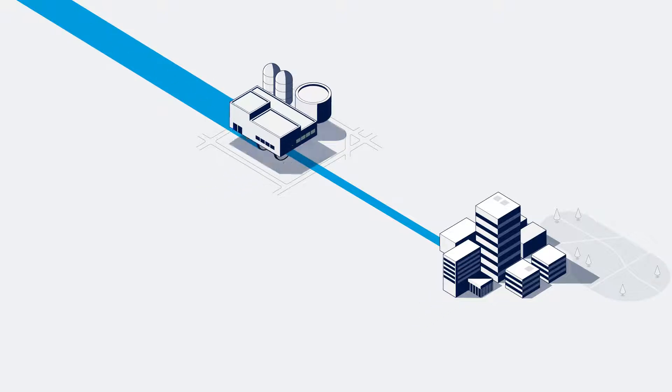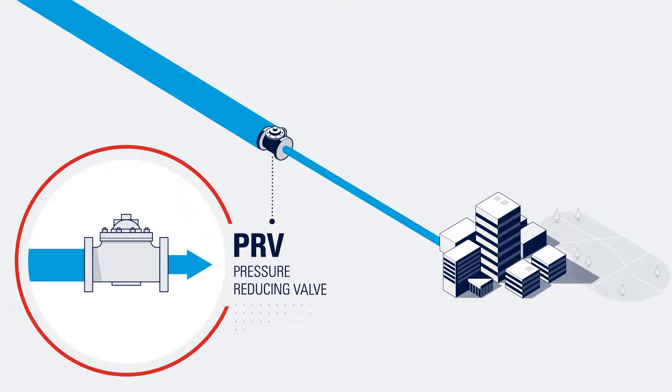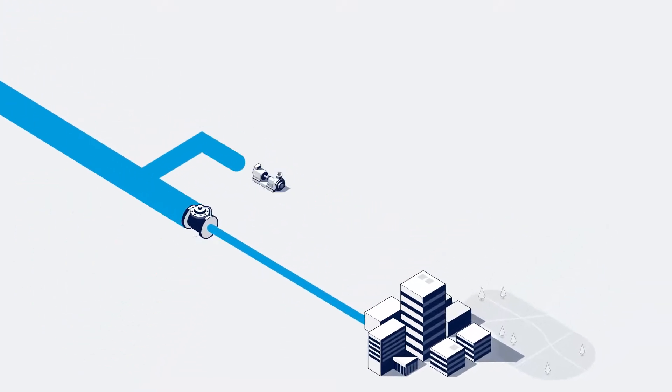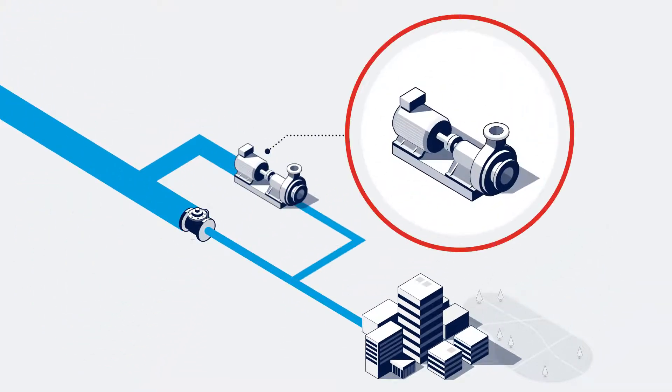Standardly, pressure reducing valves are often used to dissipate the pressure, but huge amounts of energy are wasted. To address this waste, some industries use pumps running in reverse, known as PATs, to recover some of the energy.